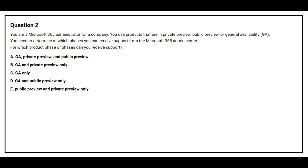Question number two: you are a Microsoft 365 administrator for a company. You use products that are in private preview, public preview, or general availability. You need to determine at which phases you can receive support from the Microsoft 365 admin center. For which product phase or phases can you receive support? Option A: GA, private preview and public preview. Option B: GA and private preview only. Option C: GA only. Option D: GA and public preview only. Option E: public preview and private preview only. The correct answer is Option C — GA only.